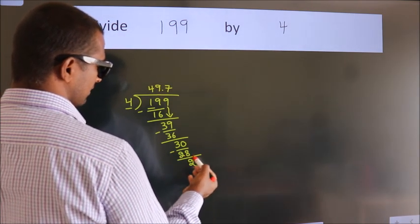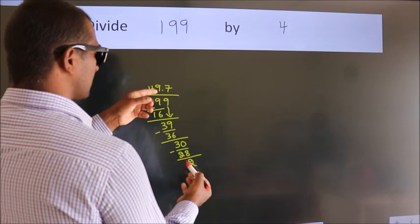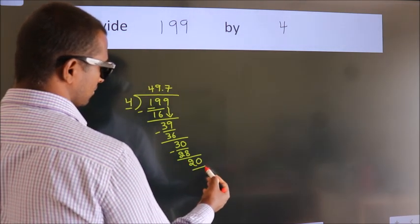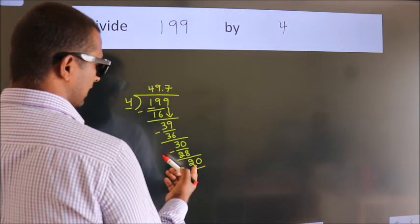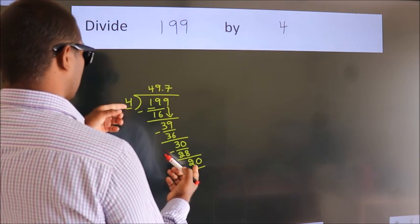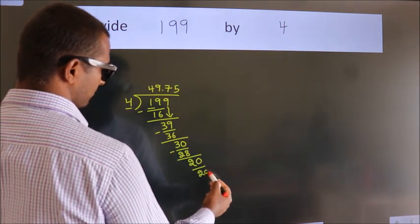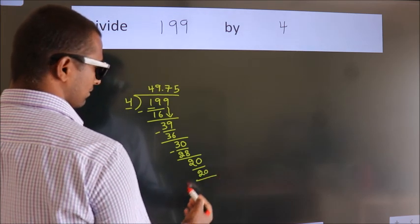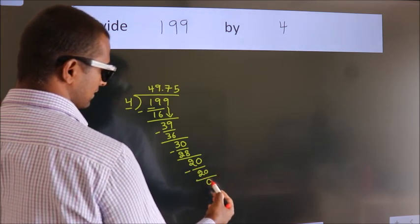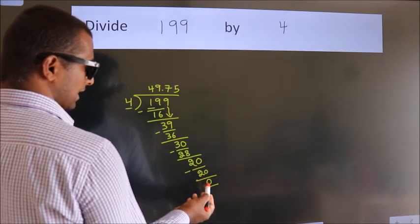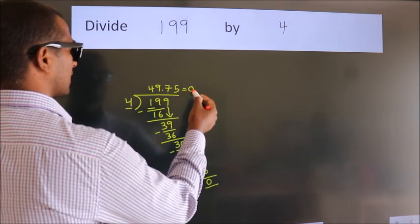After this, we already have the decimal. So directly take 0. So 20. When do we get 20 in the 4 table? 4 times 5 equals 20. Now we subtract. We get 0. We got remainder 0. So this is our quotient.